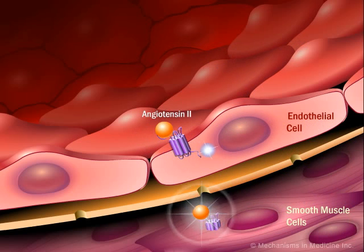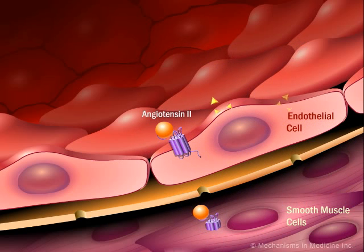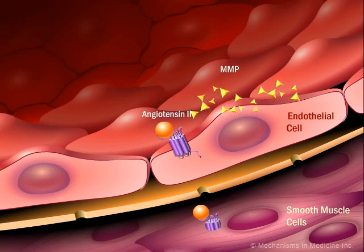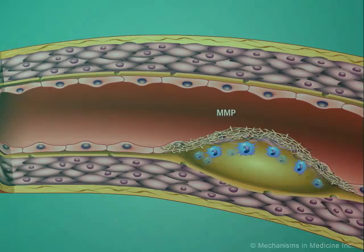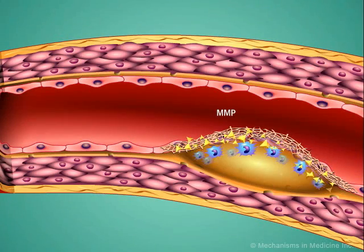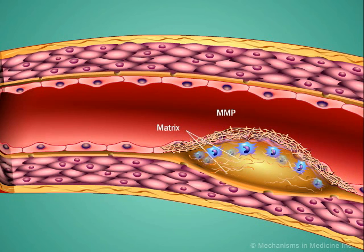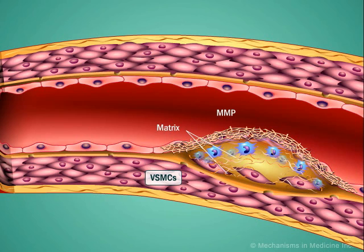Angiotensin II can mediate tissue remodeling by activation of matrix metalloproteinases (MMPs), stimulation of matrix deposition in atherosclerotic lesions, and proliferation of vascular smooth muscle cells.